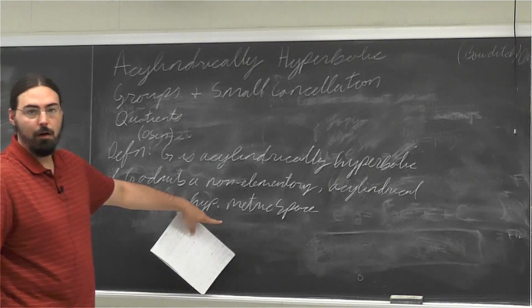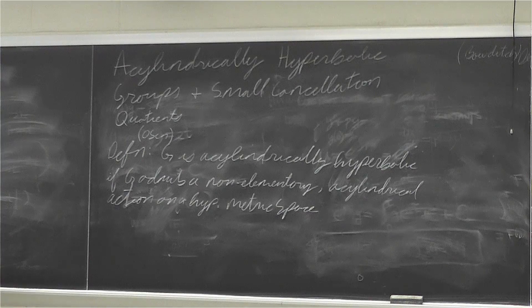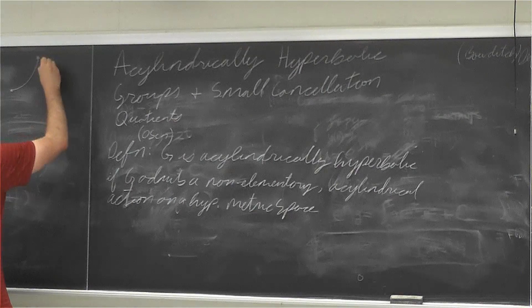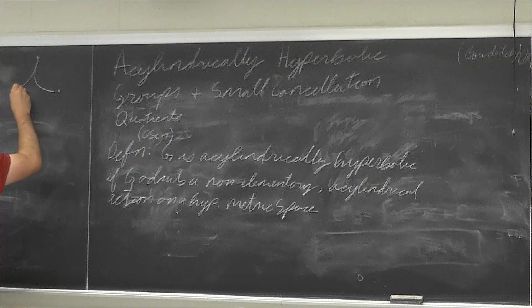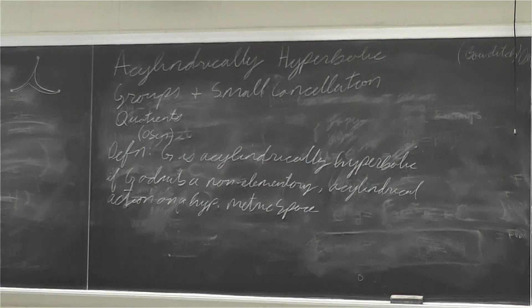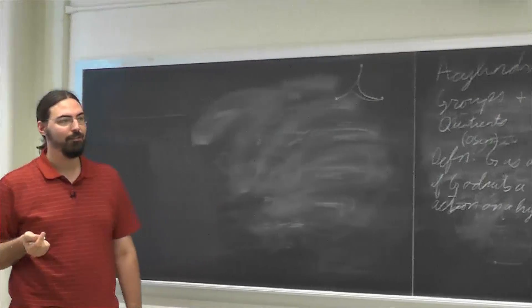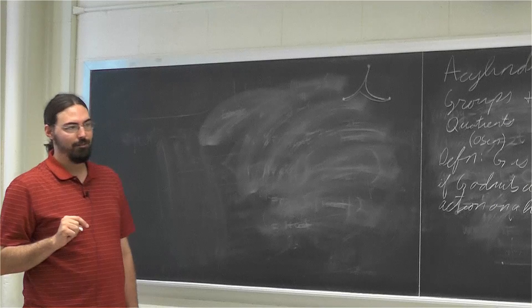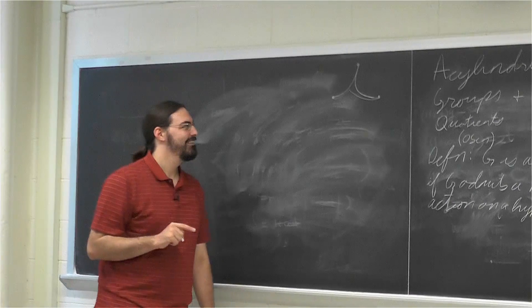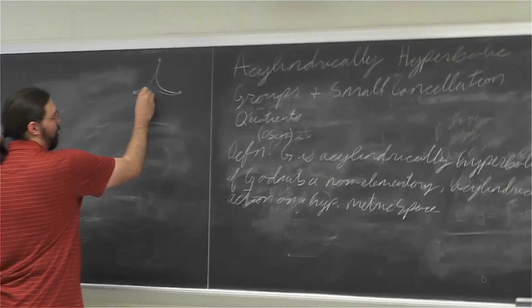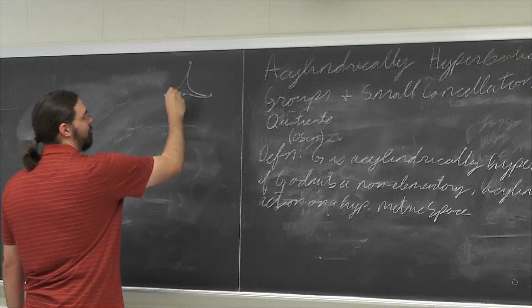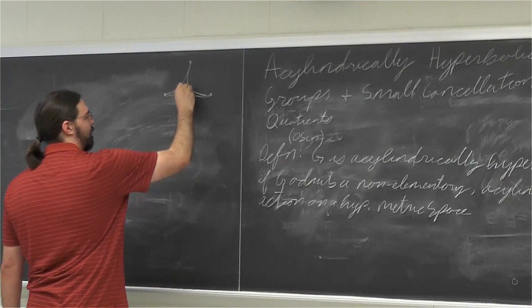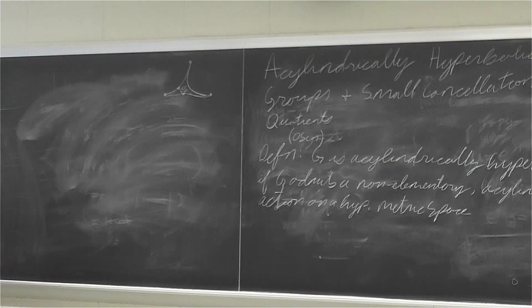A hyperbolic metric space means that if you take any three points and draw the triangle between them, these triangles are uniformly thin. If I take any point on one side of the triangle, there's a point on one of the other two sides that's at most delta away, where delta is some uniform constant independent of the three points chosen. We can assume all our metric spaces are geodesic.